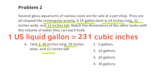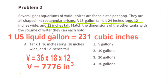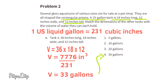Part A. Tank 1: 36 times 18 times 12 gives a volume of 7,776 cubic inches. 7,776 divided by 231 is about 33 gallons if filled to the very top. So I would select aquarium number 4, 30 gallons.